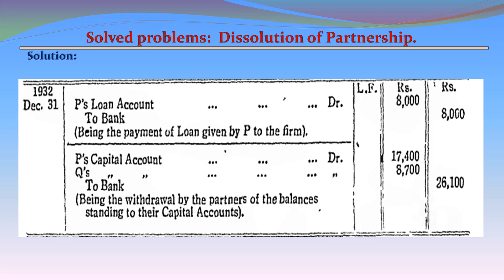Entry 6: P's Capital Account Dr. 2,600; Q's Capital Account Dr. 1,300 — To Realization Account 3,900. Being the transfer of loss on realization to partners' capital accounts in their profit-sharing proportions of 2:1. Entry 7: P's Loan Account Dr. 8,000 — To Bank 8,000. Being the repayment of loan by P to the firm. Entry 8: P's Capital Account Dr. 17,400; Q's Capital Account Dr. 8,700 — To Bank 26,100. Being the withdrawal by the partners of the balances standing to their capital accounts.